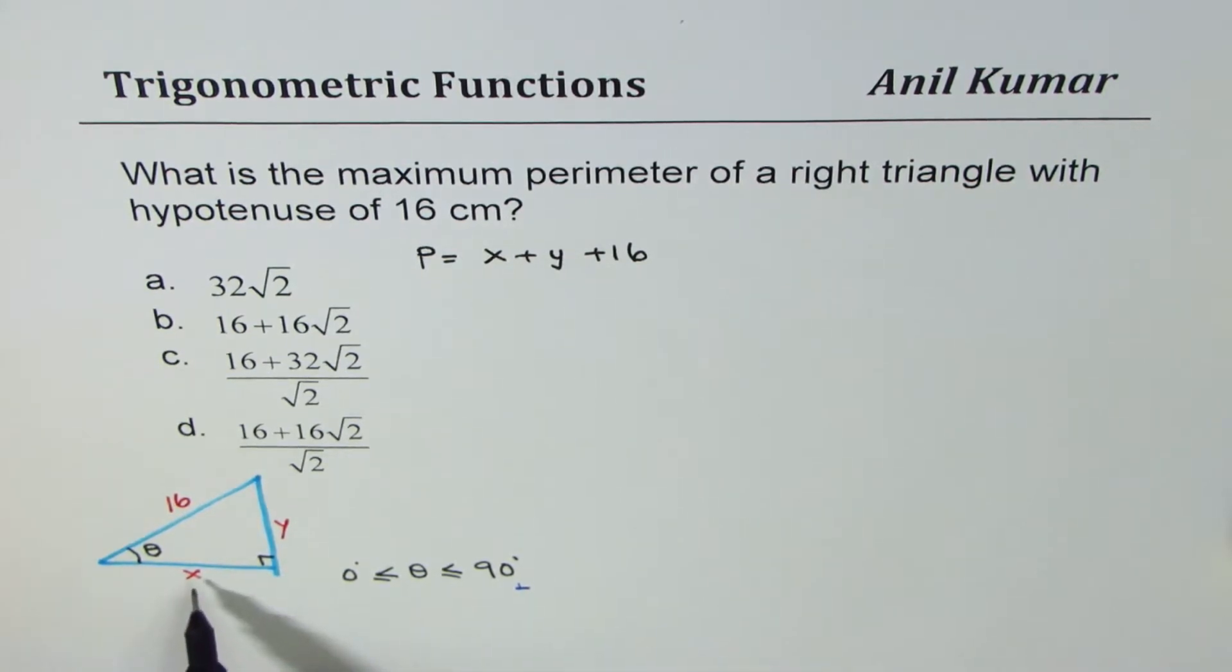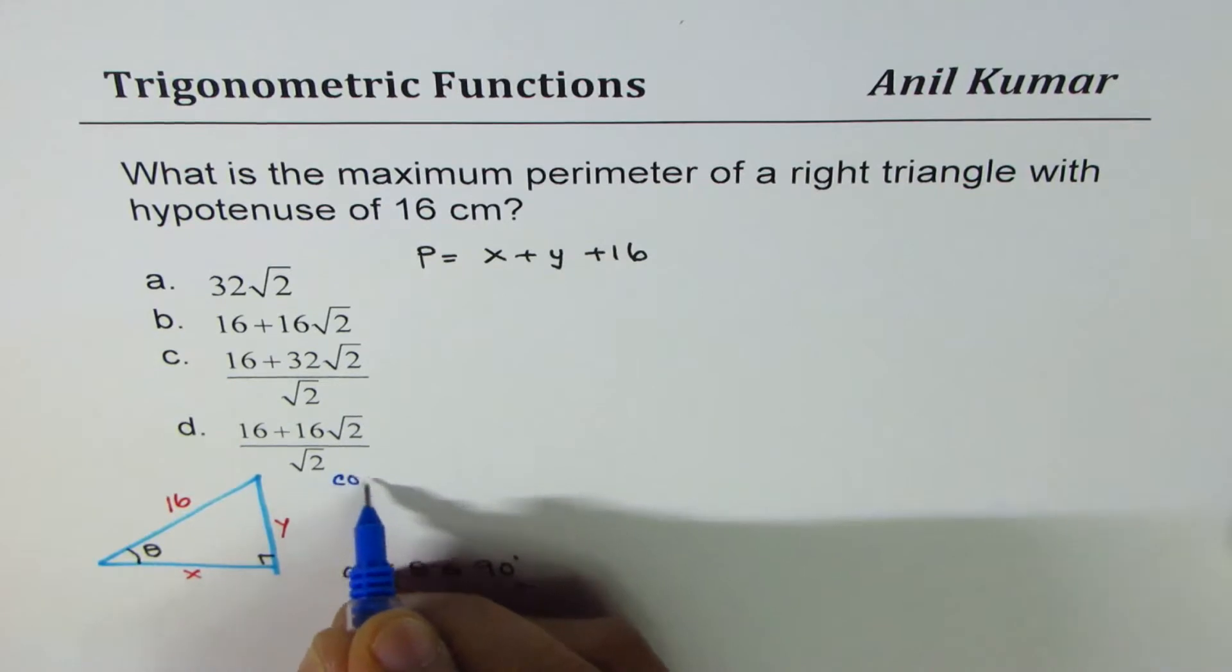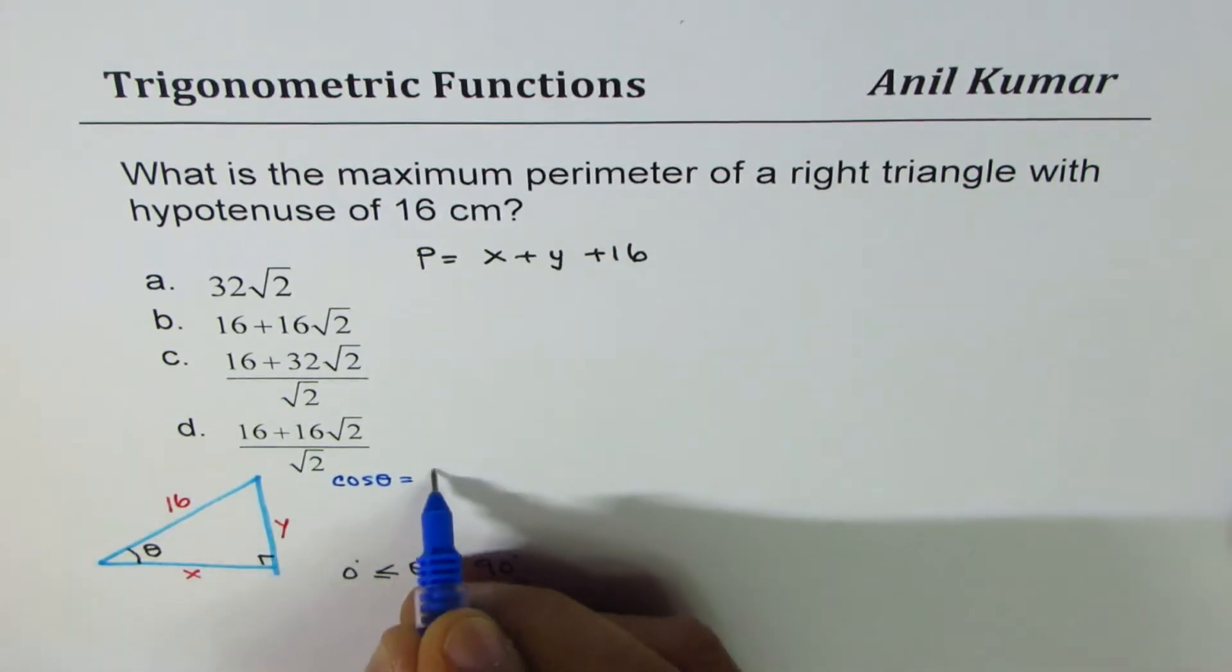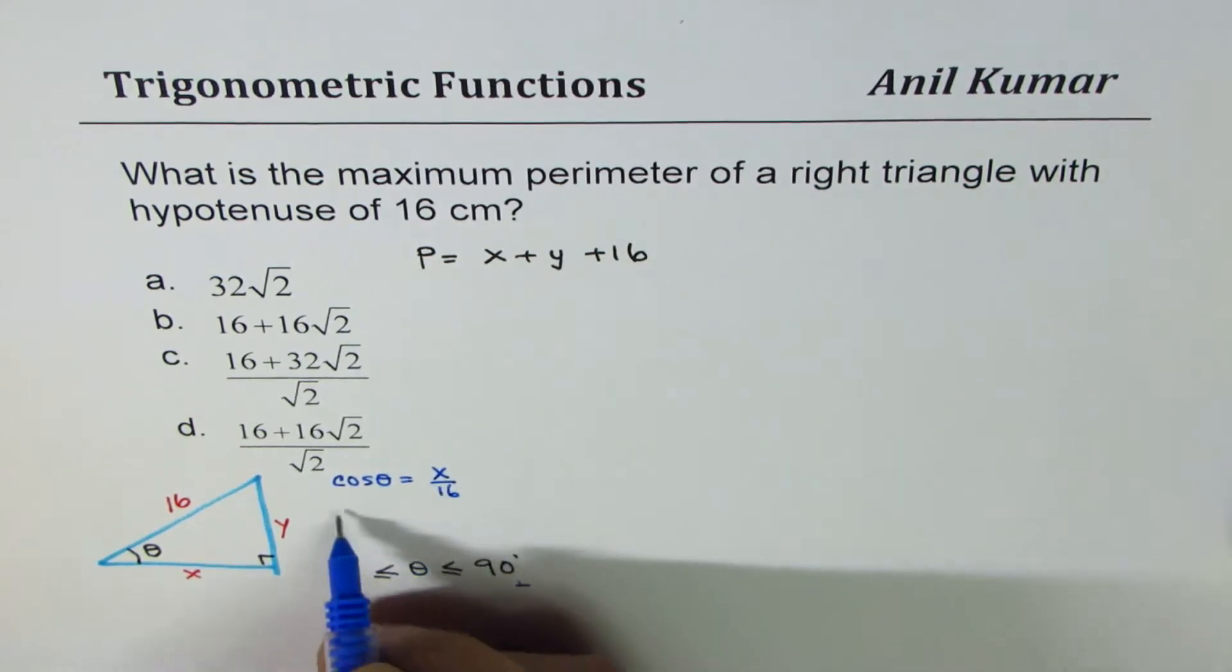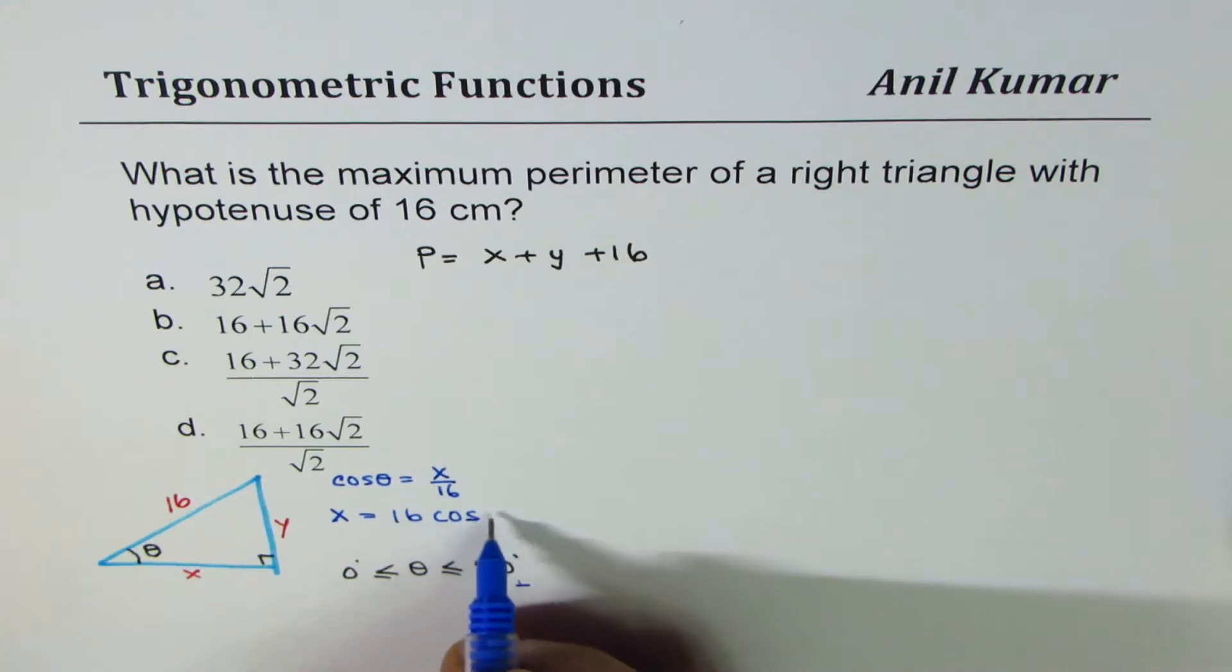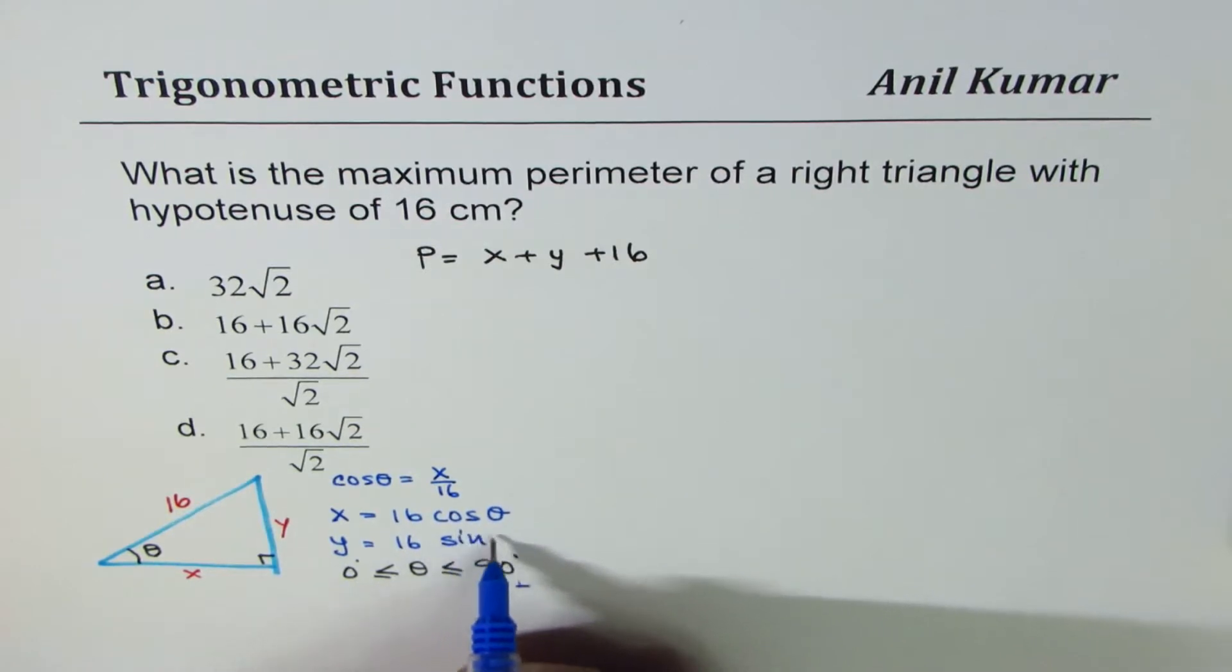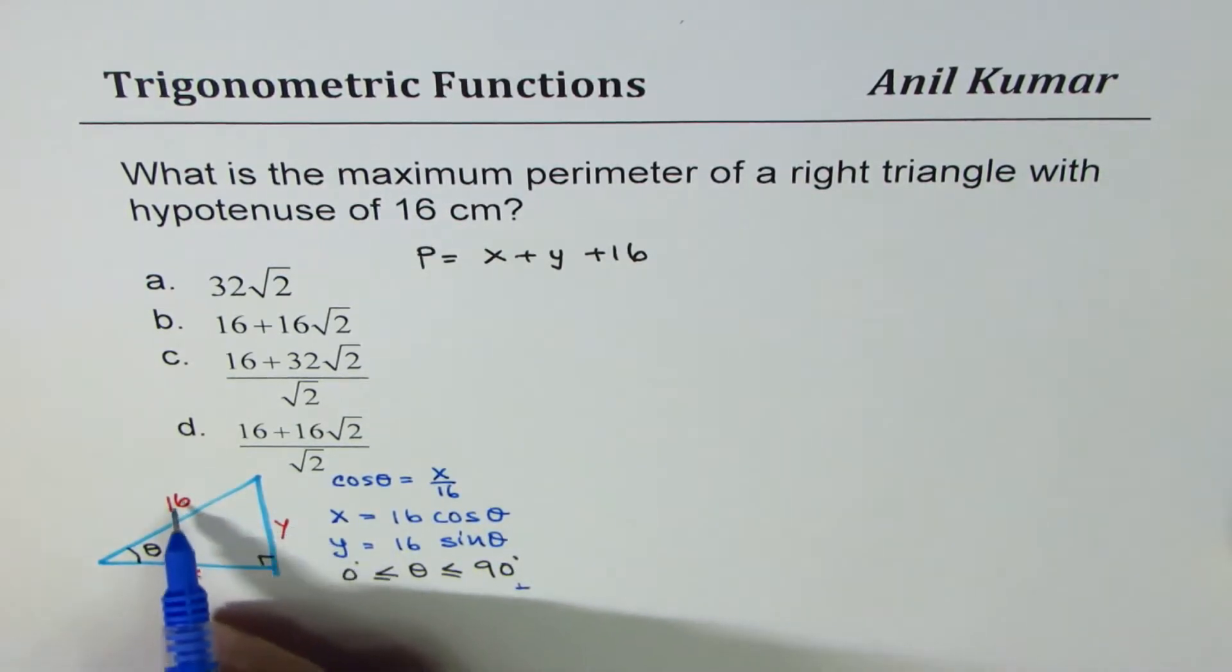You could always write x in terms of theta. We know cos theta is x over 16, so x could be written as 16 cos theta. Similarly, y can be written as 16 sin theta, since y over 16 is sin theta.